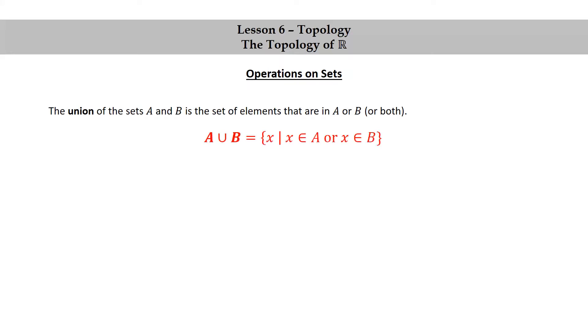Symbolically, we have A union B is equal to the set of X such that X is in A or X is in B.